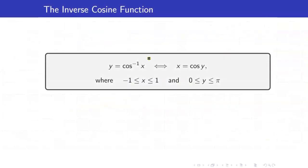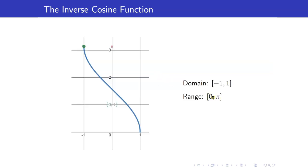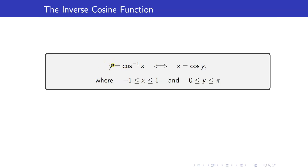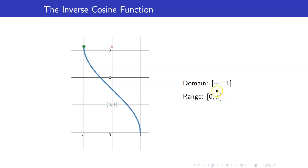Here is the definition of the inverse cosine function. We have y equals cosine inverse x if and only if x equals cosine of y, where x is between negative 1 to 1 and y is always between 0 to pi. x belongs in the domain of inverse cosine, which is negative 1 to 1, and the y values are elements of the range, which is 0 to pi.